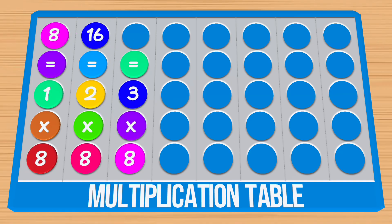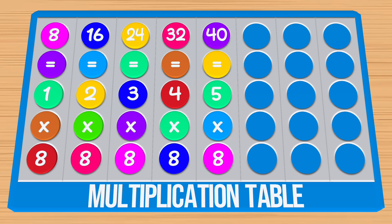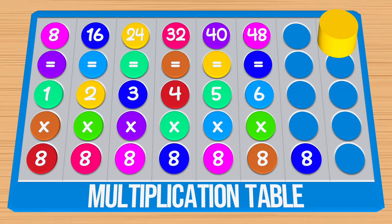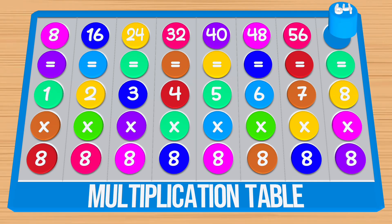8 times 4 is equal to 32. 8 times 5 is equal to 40. 8 times 6 is equal to 48. 8 times 7 is equal to 56. 8 times 8 is equal to 64.